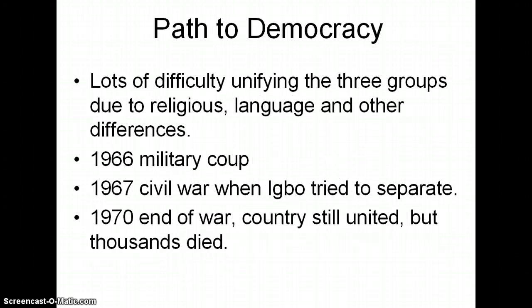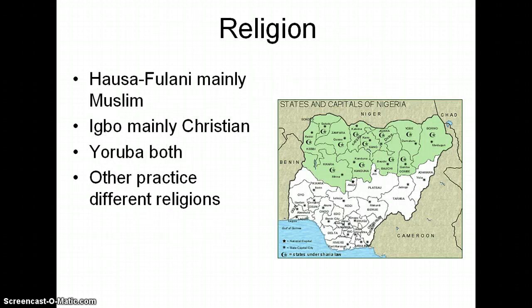In terms of the path to democracy, it's been pretty bumpy. There's been lots of difficulty unifying the three groups due to religious, language, and other differences. In 1966 there was a military coup, so the military overthrew the government. In 1967 there was a civil war where the Igbo tried to separate. By 1970, at the end of the war, the country was still united but thousands had died. Most of the Fulani are mainly Muslim, the Igbo are mainly Christian, and the Yoruba are both.